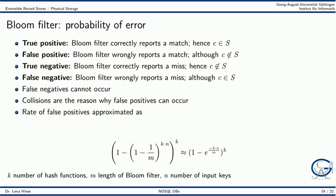A false negative would be the case that the bloom filter wrongly reports a miss. That is, it reports that c is not in S although it actually is. The good thing about bloom filters is that this last case of false negatives cannot occur. However, due to collisions of the hash functions, false positives can occur.